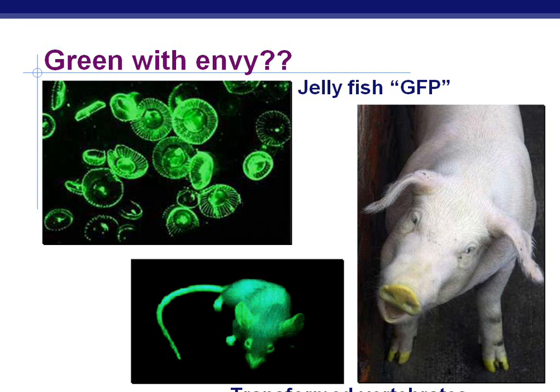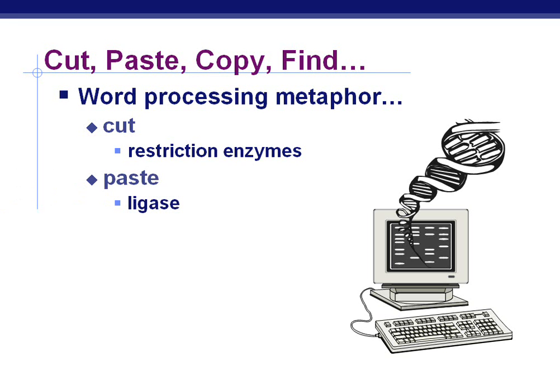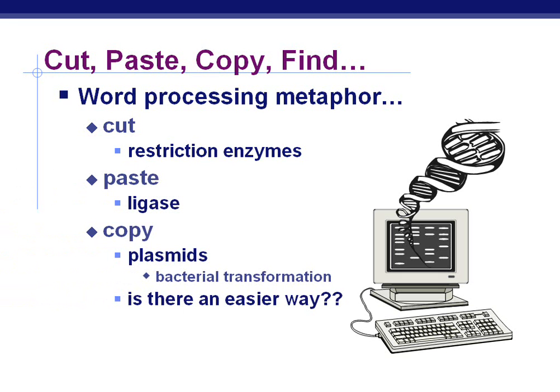So: cut, paste, copy, find — this is like a word processing metaphor. You cut out the gene that you want with restriction enzymes. You paste it into your vector with ligase. You then copy those plasmids — this is your bacterial transformation. And then you find whatever gene it is that you're looking for. Make sure your notes are filled out, and when you're ready, move on to the next PowerPoint.